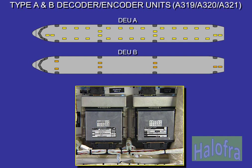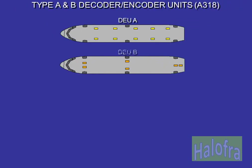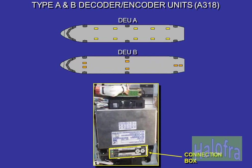Decoder encoder units, DEUs type A and B, are located behind the cabin ceiling panels. On the A318, a new DEU generation is installed with a new connection box. The number of DEUs is reduced compared to the previous CIDS generation. Up to 17 type A DEUs plus 1 spare can be installed in the cabin, with 10 in typical configuration. Up to 6 type B DEUs can be installed, with 4 in typical configuration.